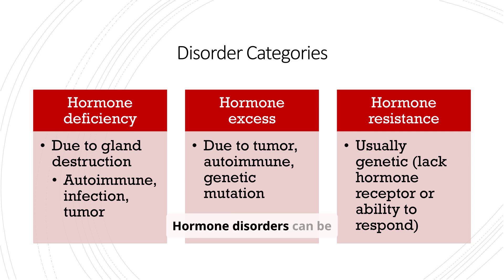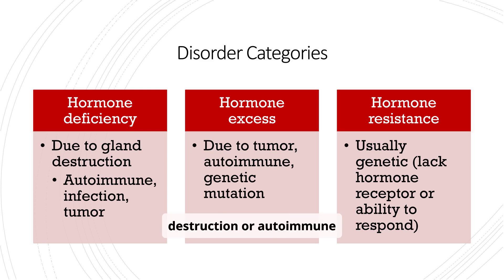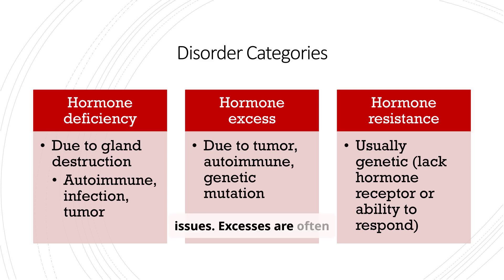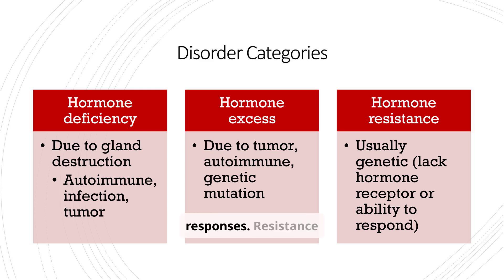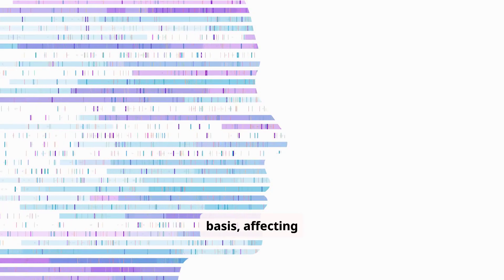Hormone disorders can be categorized into deficiencies, excesses, and resistance. Deficiencies can arise from gland destruction or autoimmune issues. Excesses are often due to tumors or autoimmune responses. Resistance usually has a genetic basis, affecting hormone receptors.